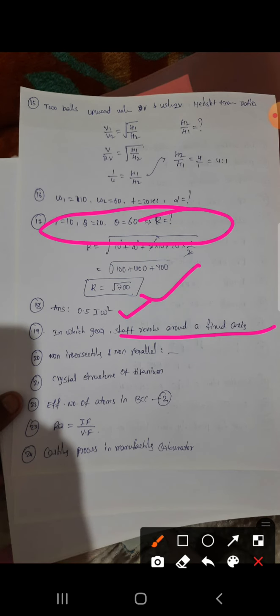In non-intersecting, non-parallel, there is one question. Which type of gear they are asking. Structural crystal of titanium they are asking. Effective number of atoms in BCC, that is 2. Reynolds number, inertia force by viscous force. And casting process in manufacturing carburetor they are asking. Heat transfer due to free electron, that is conduction.